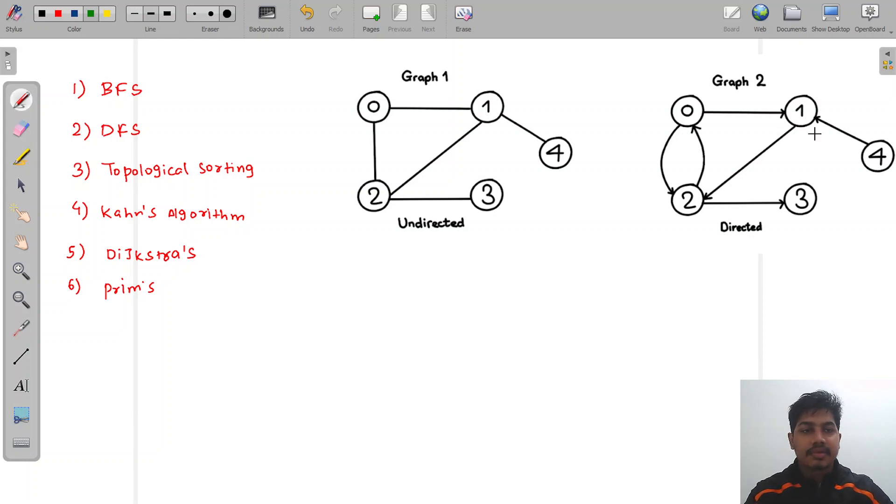Next algorithm is topological sorting. Let's suppose we have a graph something like this. This zero to one indicates that this directed edge indicates that to complete task zero, we need to complete task one first. There can be some complex relation like this which can be represented as a graph. To solve this type of graph, we use topological sorting—that is, we want to resolve which task we should perform first in order to complete all the tasks.